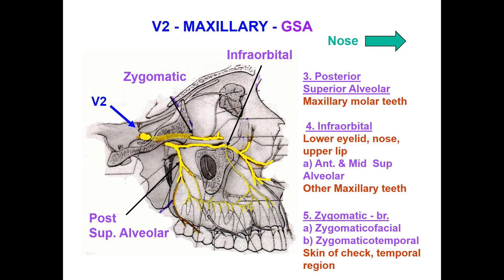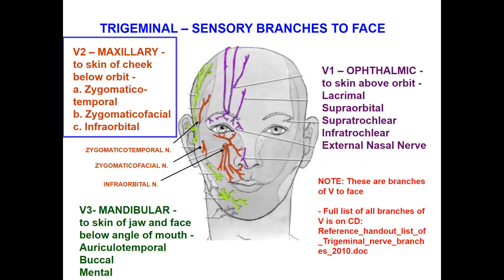The other branches are: the posterior superior alveolar nerve for the maxillary molar teeth; the infraorbital nerve for the lower eyelid, nose, and upper lip, which gives off the anterior and middle superior alveolar nerves for other maxillary teeth; and the fifth branch — the zygomatic branches: zygomaticofacial and zygomaticotemporal, for the skin of the cheek and the temporal region.